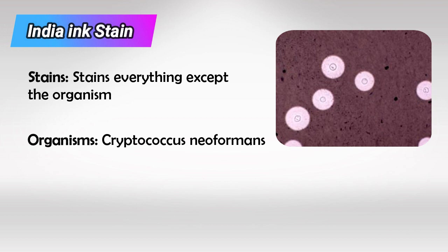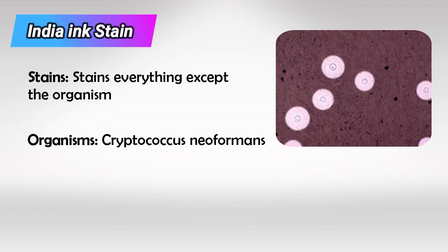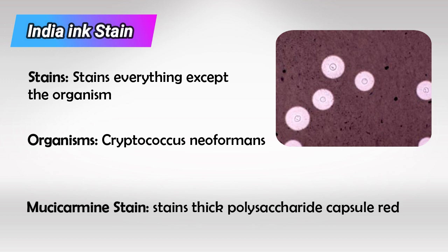Indian ink can be used for thick-capsulated organisms. It stains the background while leaving the organism intact — so it basically stains everything except the organism. But if you want to stain the organism itself, we can use Mucicarmine stain, which stains the capsule itself.